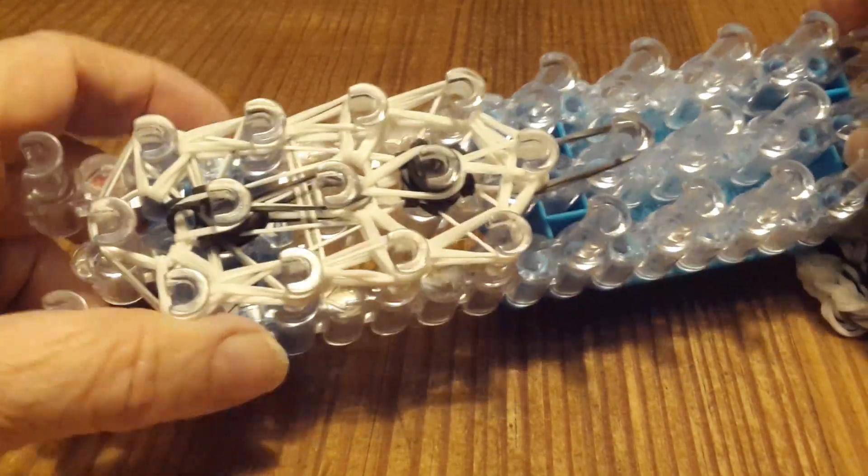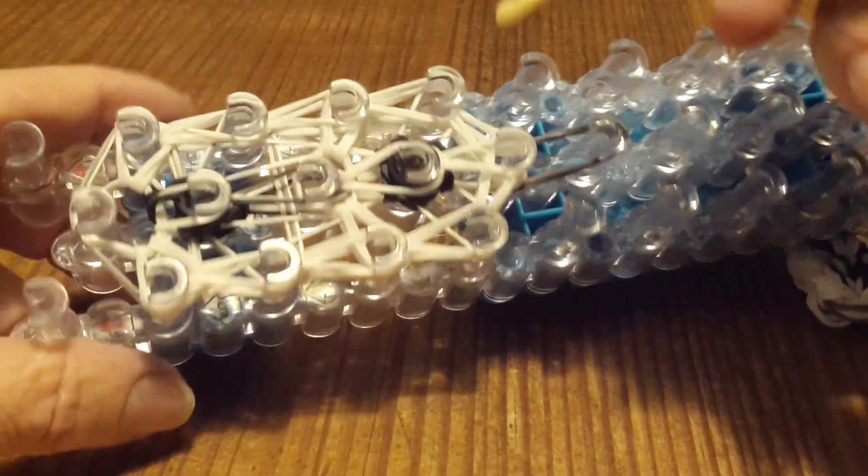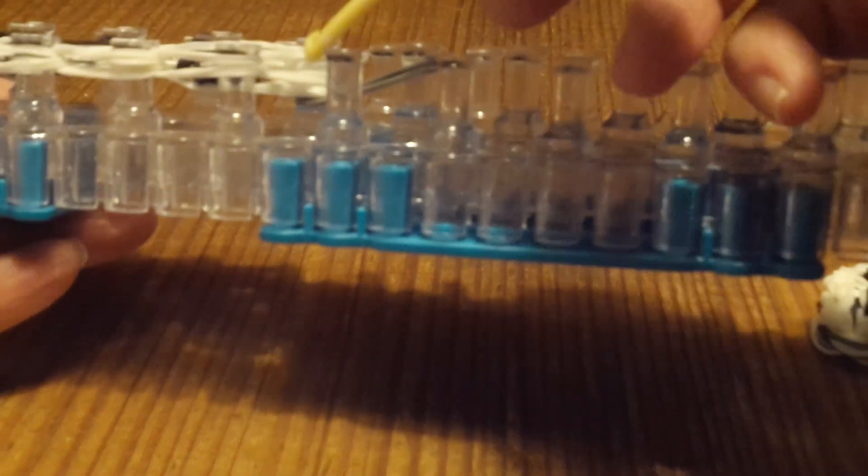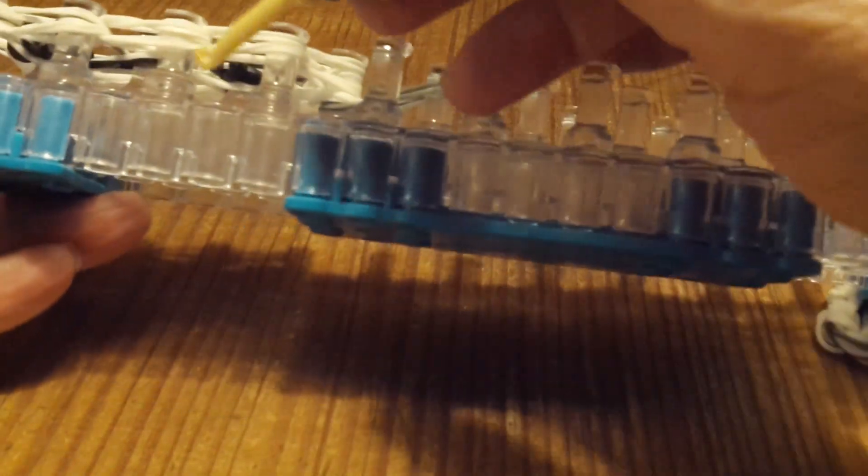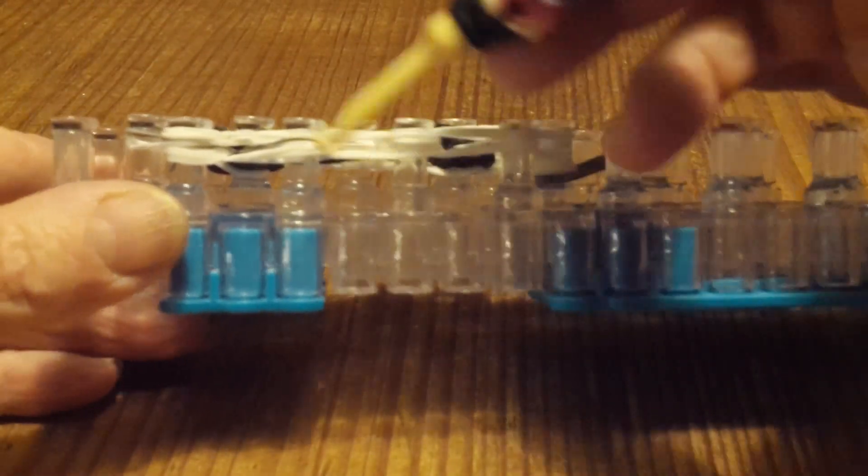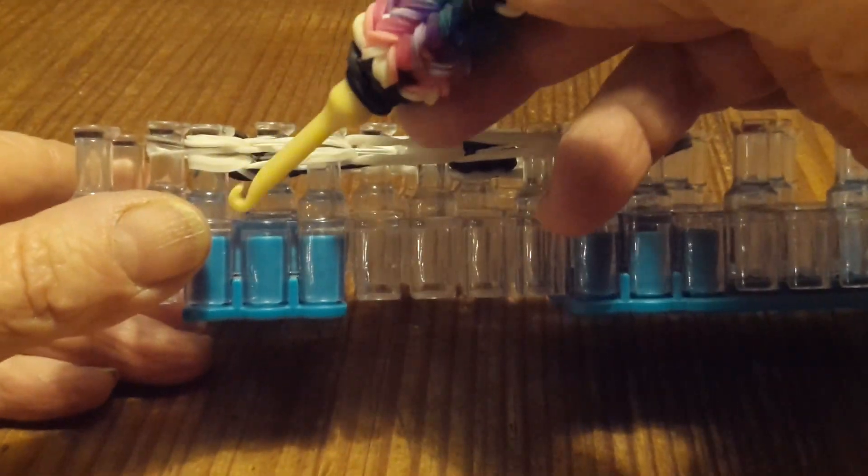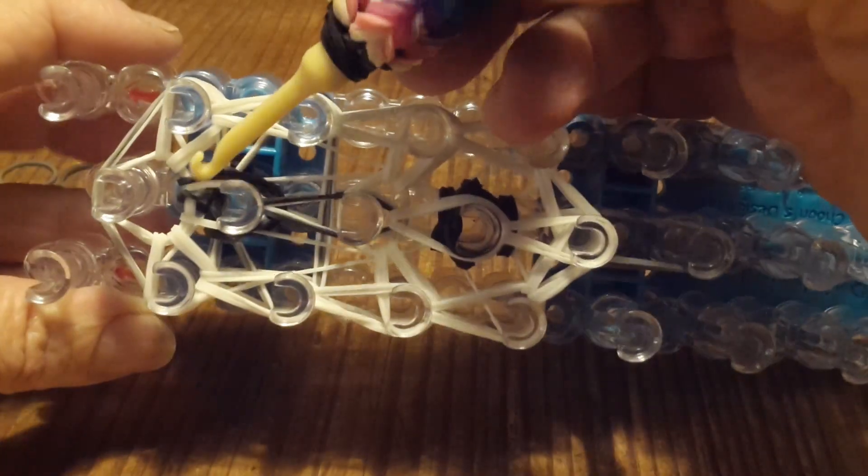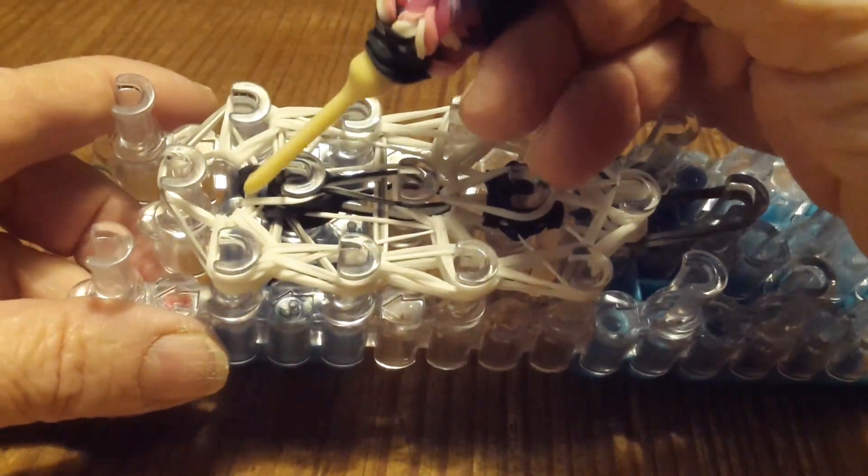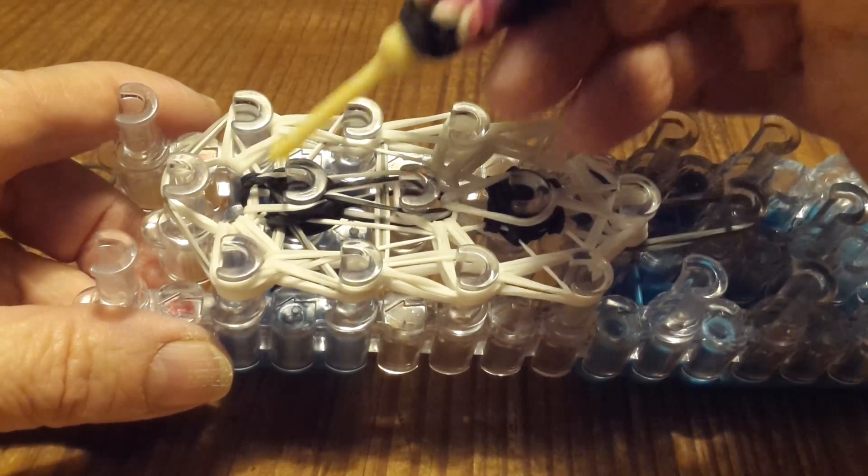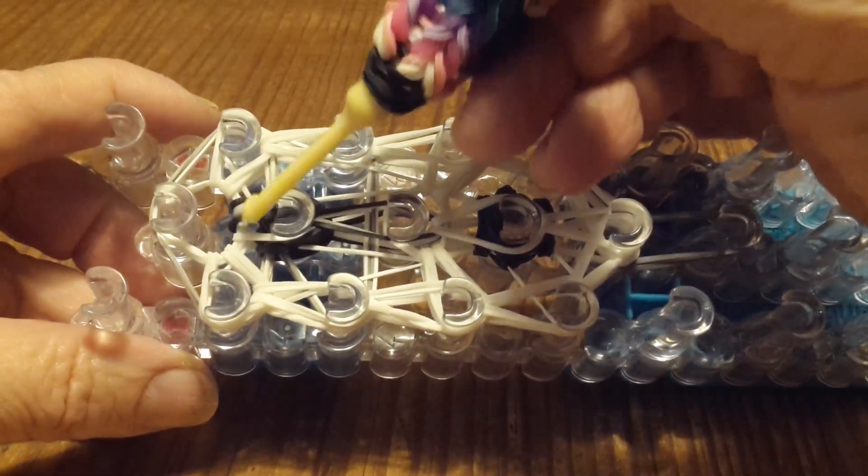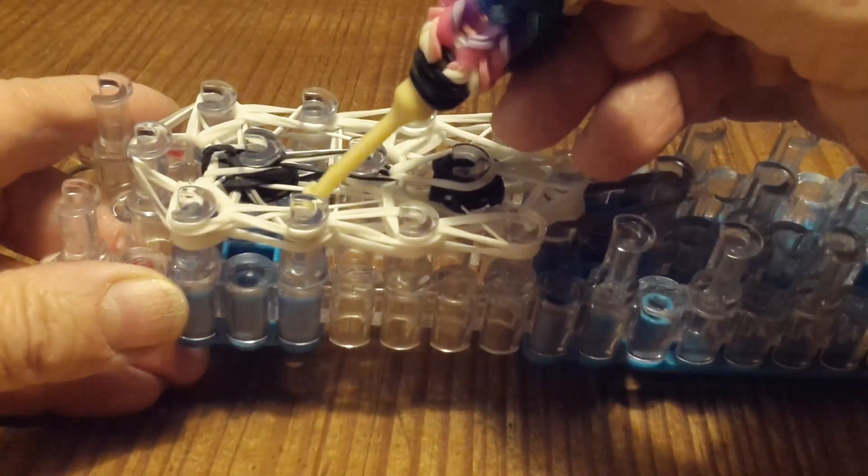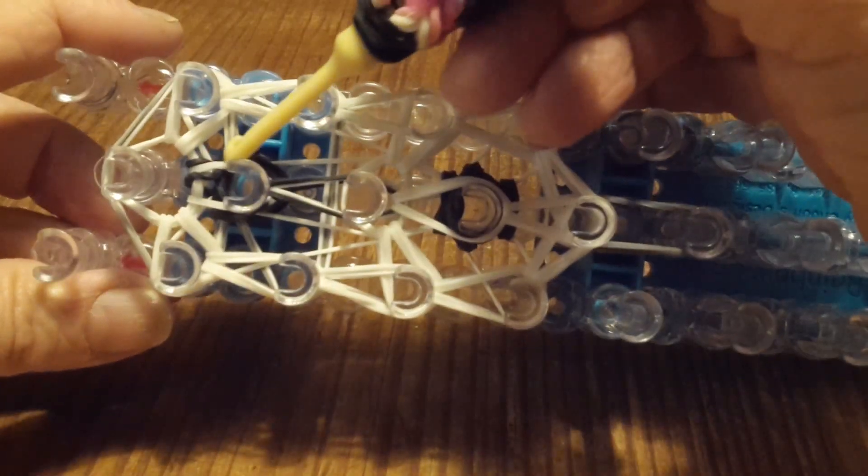And there we have it. All of your looping is done. At this point I want to go back and check, make sure I haven't missed any rubber bands. Nothing's lying down here loose. I see some slack here but that's okay, that's part of the jaw and that's often loose, but it is caught up.